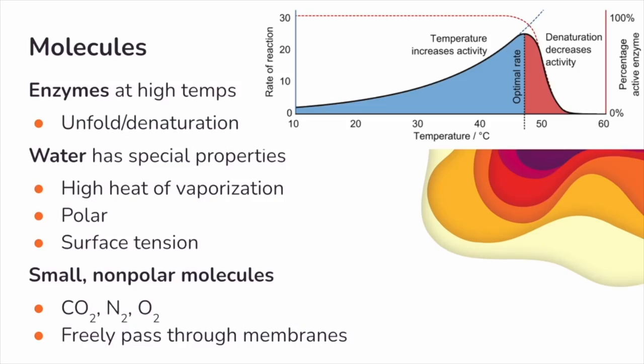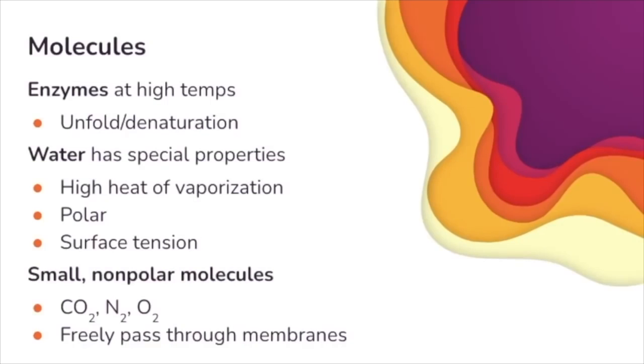Some common topics and themes related to molecules and molecular biology. Enzymes at high temperatures will unfold or denature or lose their shape and lose their function. An increase in temperature above the optimum range for the enzyme can alter the shape of the active site and reduce a reaction rate. Water has a lot of special properties, such as high heat of vaporization, the fact that it's polar, surface tension. For example, that high heat of vaporization is involved with sweat because water absorbs a large quantity of heat during that liquid to gas phase change, which lowers body temperature and brings us back to homeostasis.